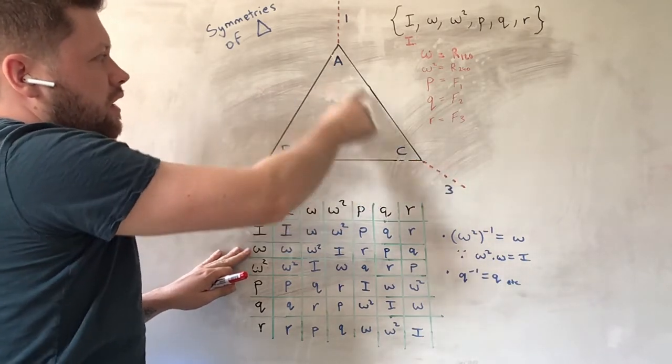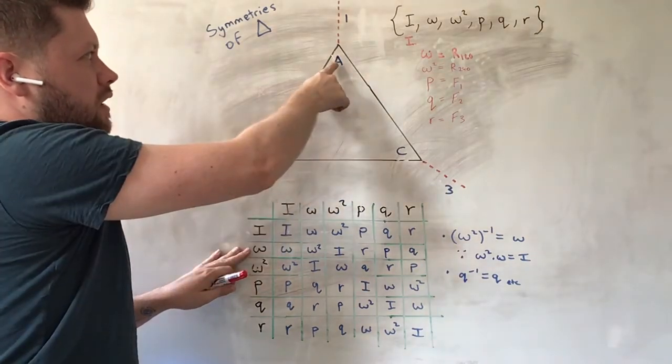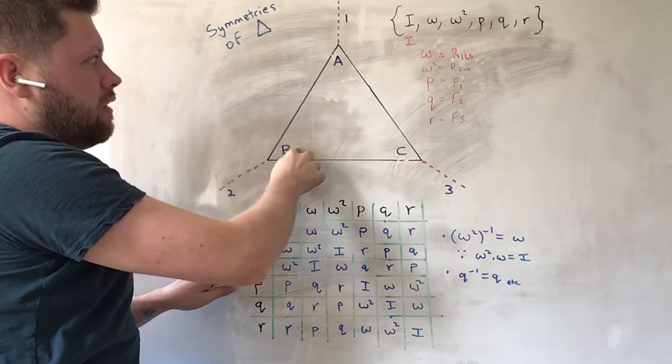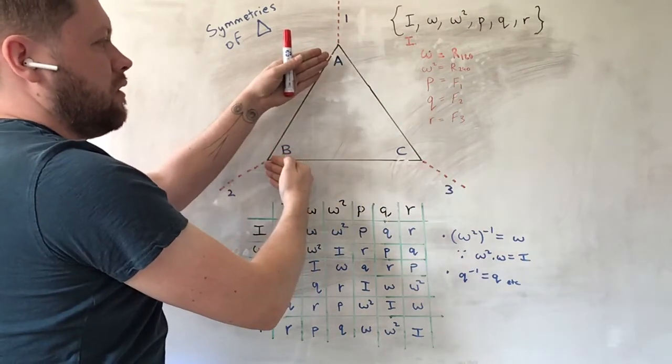So, if A goes to C, C will go to B, and B will go to C with the first transformation. So, you have C here and B there, but if you flip it, they swap.